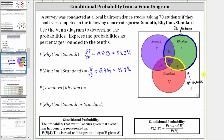So we have 18 students in this subset, which means the probability a student competed in standard given they competed in rhythm is 18 out of 36. This simplifies to one half, which is equal to 0.5, which is equal to 50%.